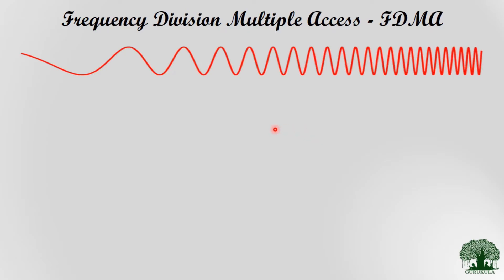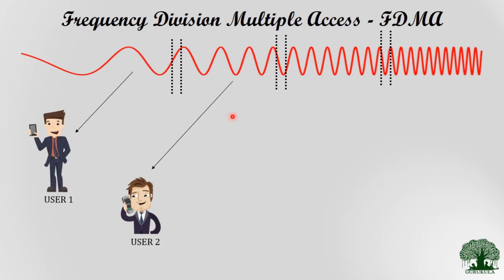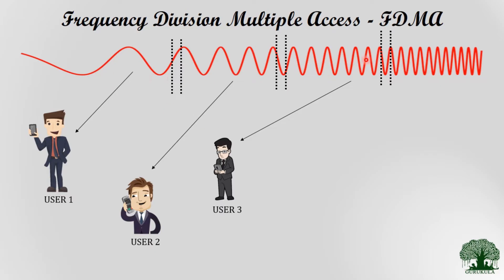In FDMA, the entire radio spectrum available for communication is divided into several frequency ranges. Each frequency range is allocated to a different user. As depicted in the figure, different sets of frequencies are allocated to different users — User 1 uses one set of frequencies, User 2 uses another, and User 3 uses yet another. Each user is differentiated in terms of frequency, hence the name Frequency Division Multiple Access.